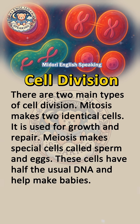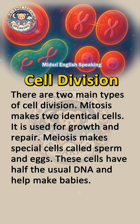There are two main types of cell division. Mitosis makes two identical cells and is used for growth and repair. Meiosis makes special cells called sperm and eggs. These cells have half the usual DNA and help make babies.